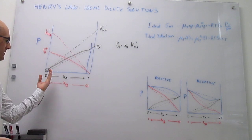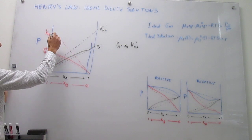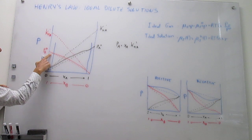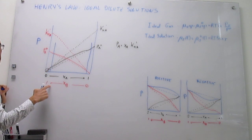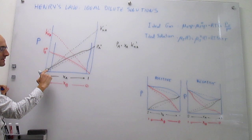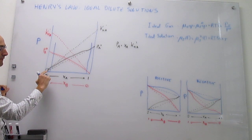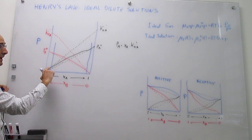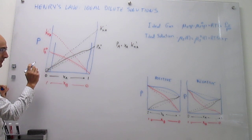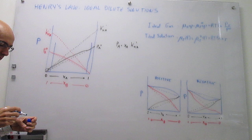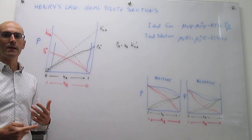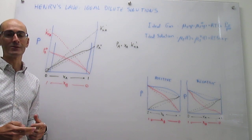The same applies for the other range of concentration. In the part of the curve where B is the majority component, the solvent is B and B follows Raoult's law. The minority component — the solute, which is A — follows not Raoult's law but instead Henry's law. To reiterate: an ideal dilute solution is one in which the majority component, the solvent, follows Raoult's law, and the minority component, the solute, follows Henry's law.